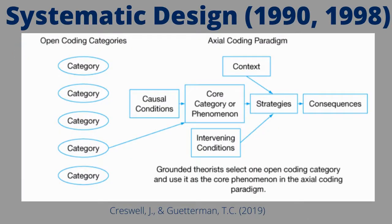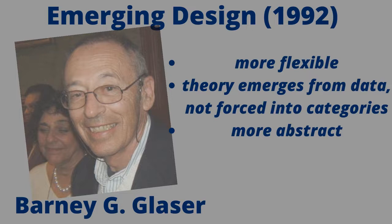Systematic design came under fire from Glaser for being too rigid and focused on the coding and categorization process. This method uses preset categories and is focused on describing the categories through an open, axial, and selective coding process. Glaser's emergent design is less rigid in its process than the systematic design, and works in a constant cycle of examining and comparing data, and refining.